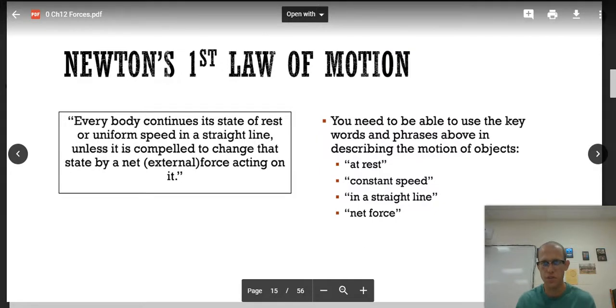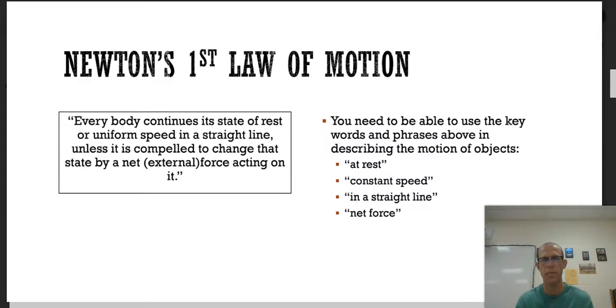When we talk about this first law, you need to be able to describe the following phrases: at rest, constant speed, in a straight line, and what net force is. At rest means not moving, zero meters per second, stationary. Constant speed means going at the same miles per hour, meters per second, not accelerating at all.